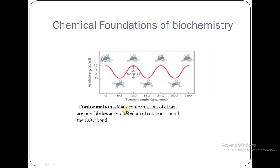Conformations are the positions of atoms in space that we can change by rotation around a single bond without breaking covalent bonds. Many conformations of ethane are possible because of freedom of rotation around the C-C bond. If a single bond is present, we can rotate it to achieve different conformations of the ethane molecule.